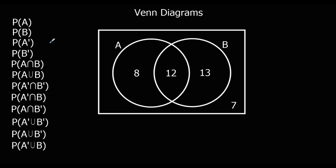Down here we've got a list of terminology that you've got to be aware of. So P(A) means the probability of A — the probability of someone liking apples. How many people like apples? It's this whole circle. There's 8 here and 12 here, so 20 people out of a total of 40 people. So 20 out of 40 like apples.